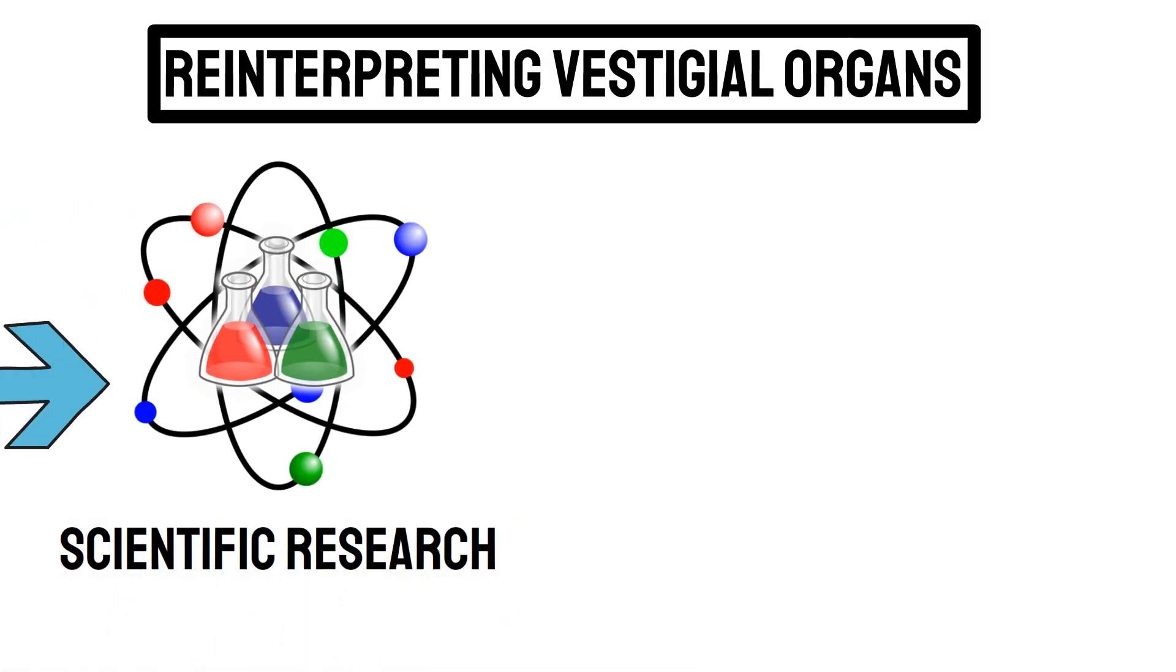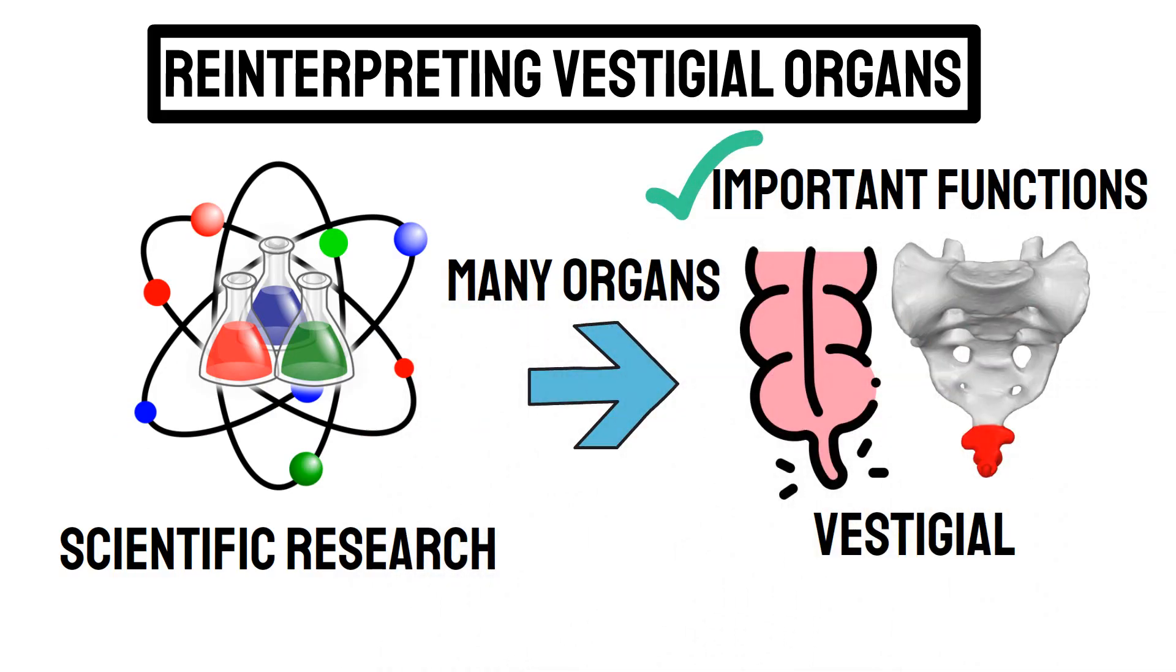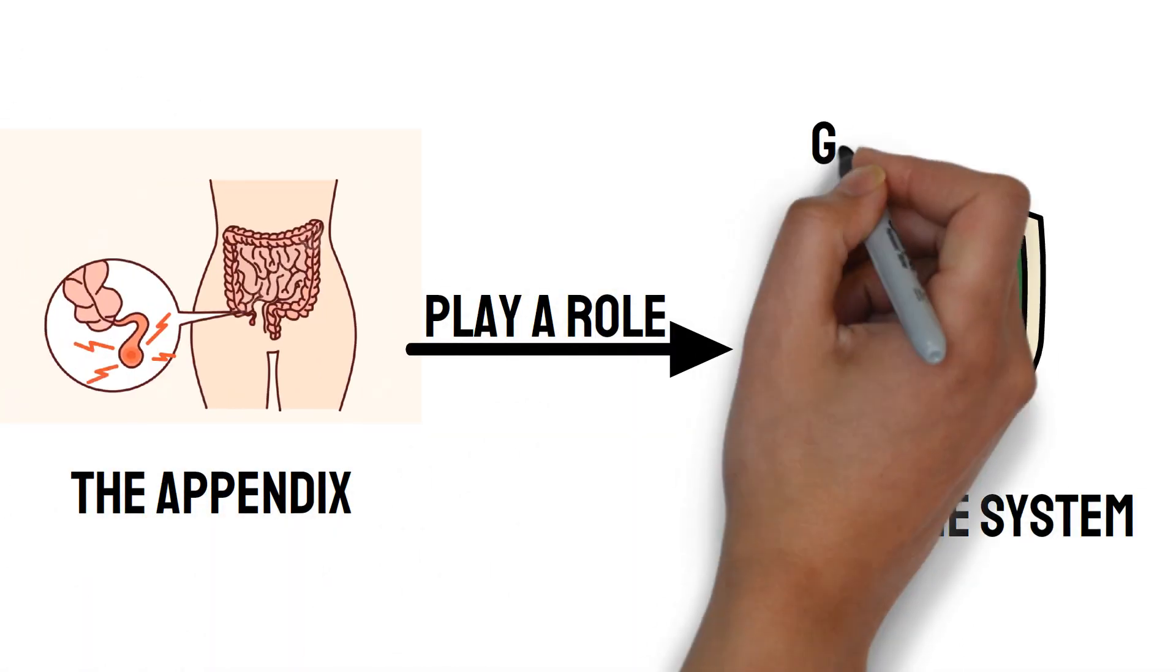However, recent scientific research has shown that many organs, once considered vestigial, do, in fact, have important functions. For instance, the appendix has been found to play a role in the immune system, particularly in gut health.